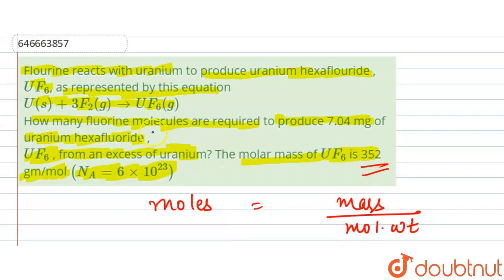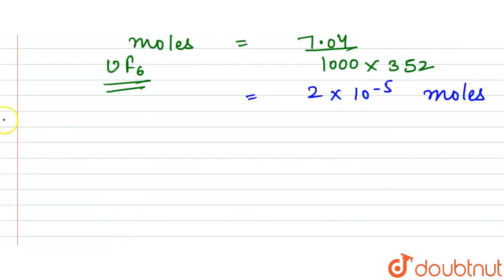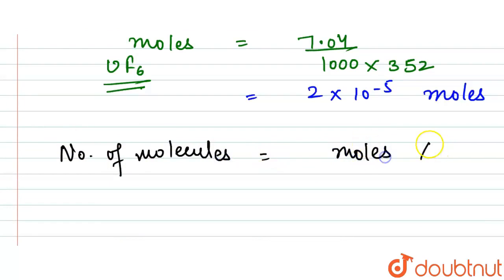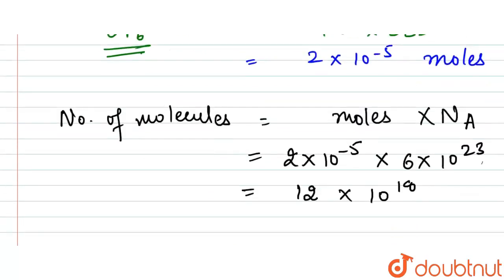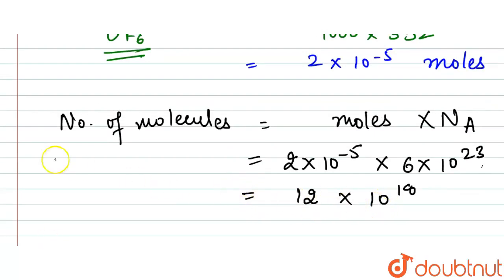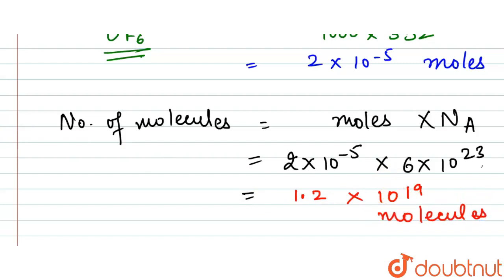Next, we find the number of molecules. The number of molecules equals moles multiplied by Avogadro's number. So that is 2×10⁻⁵ multiplied by 6×10²³, which gives us 12×10¹⁸, or 1.2×10¹⁹ molecules of UF₆.